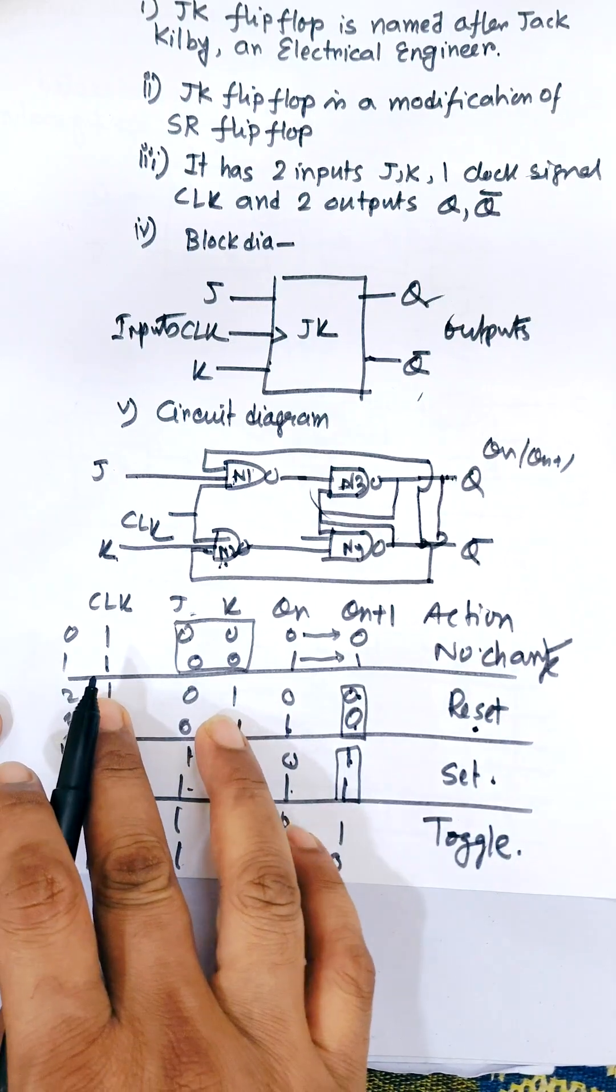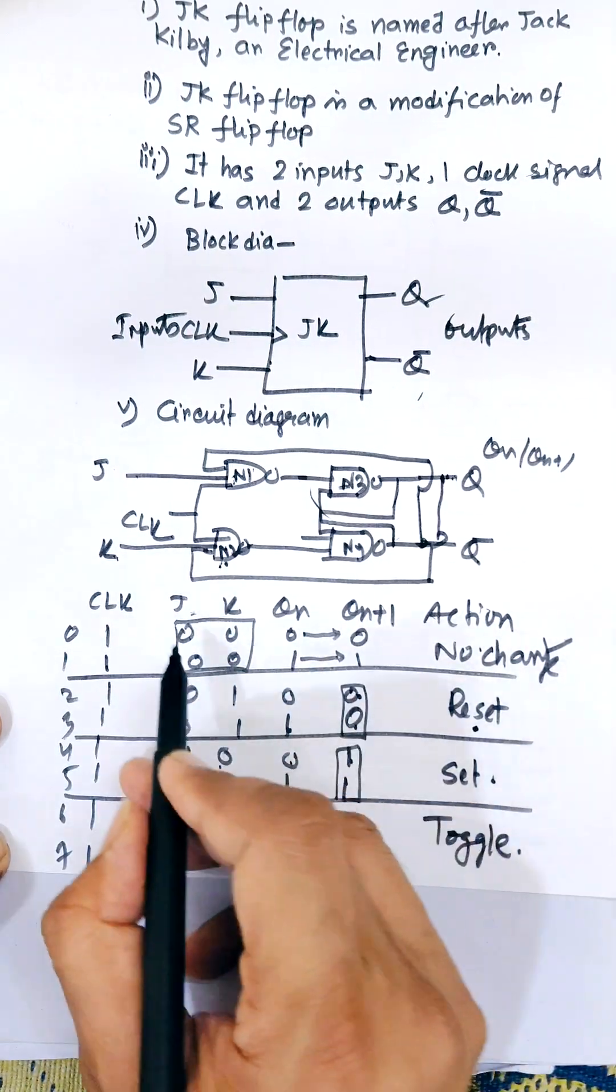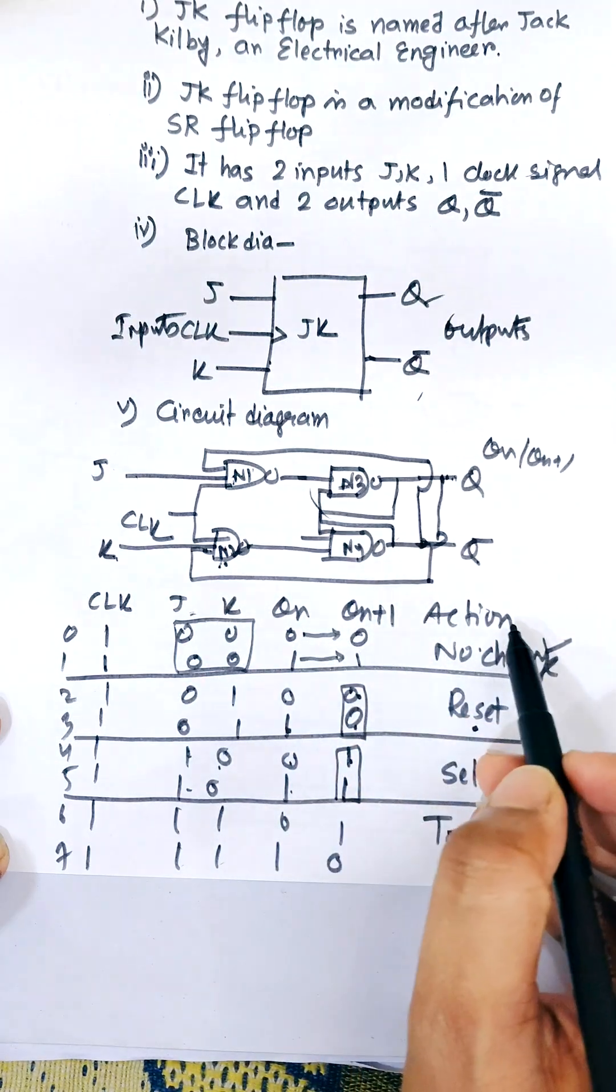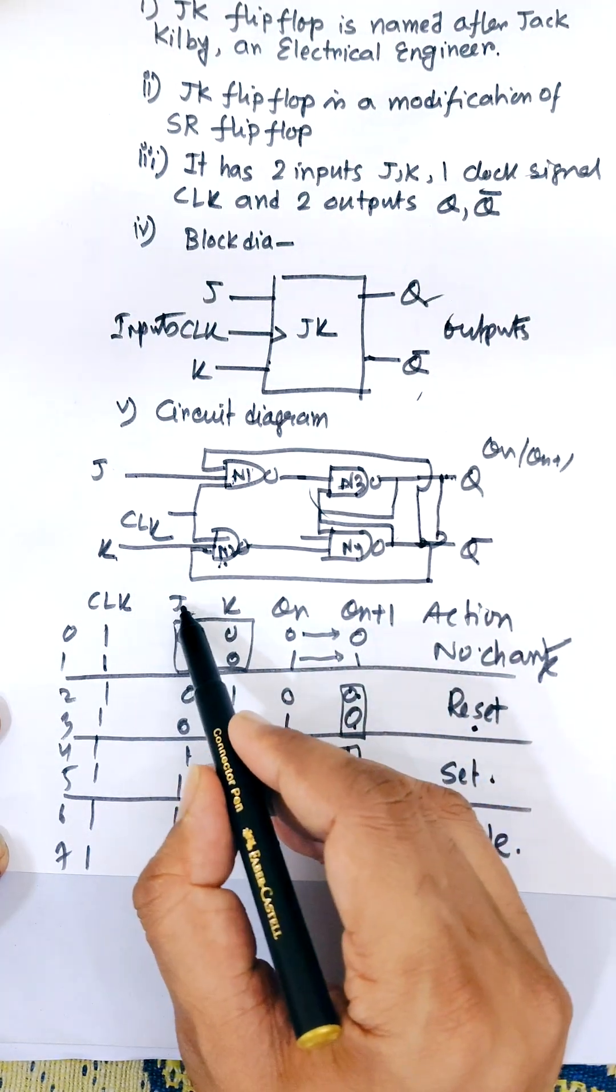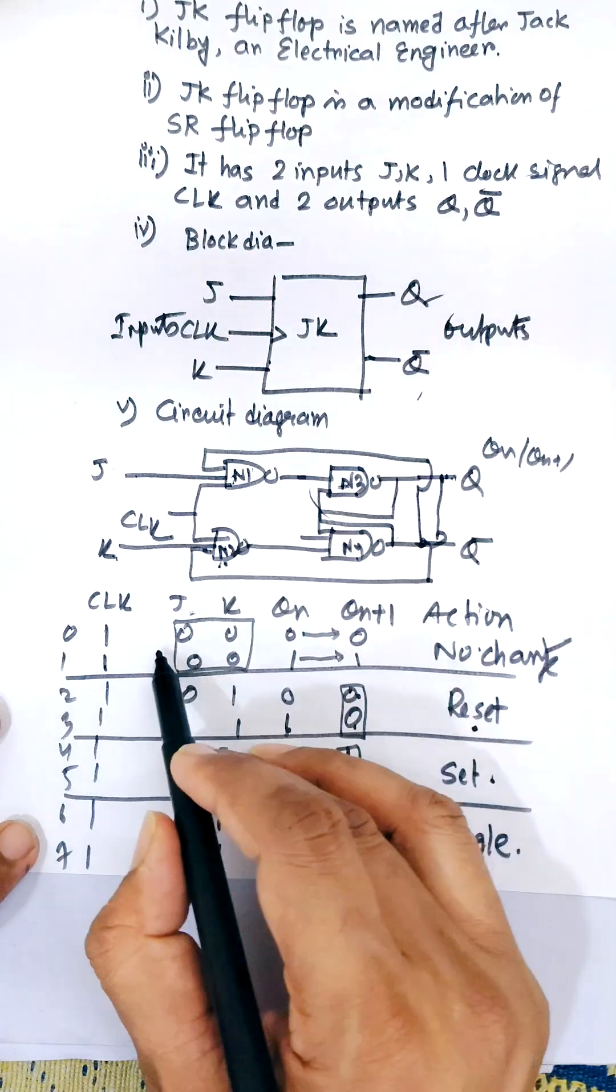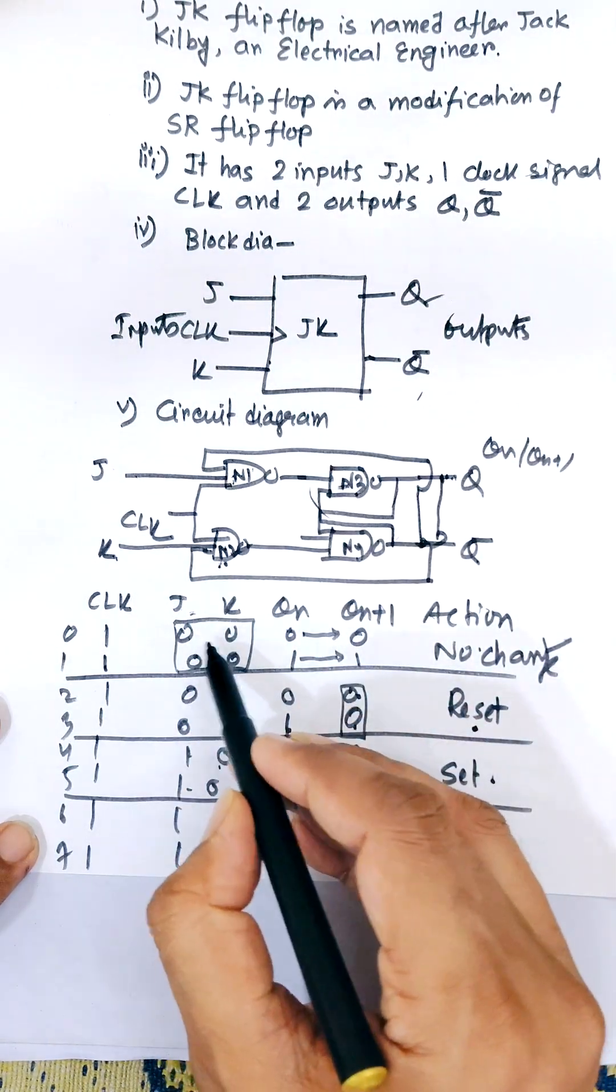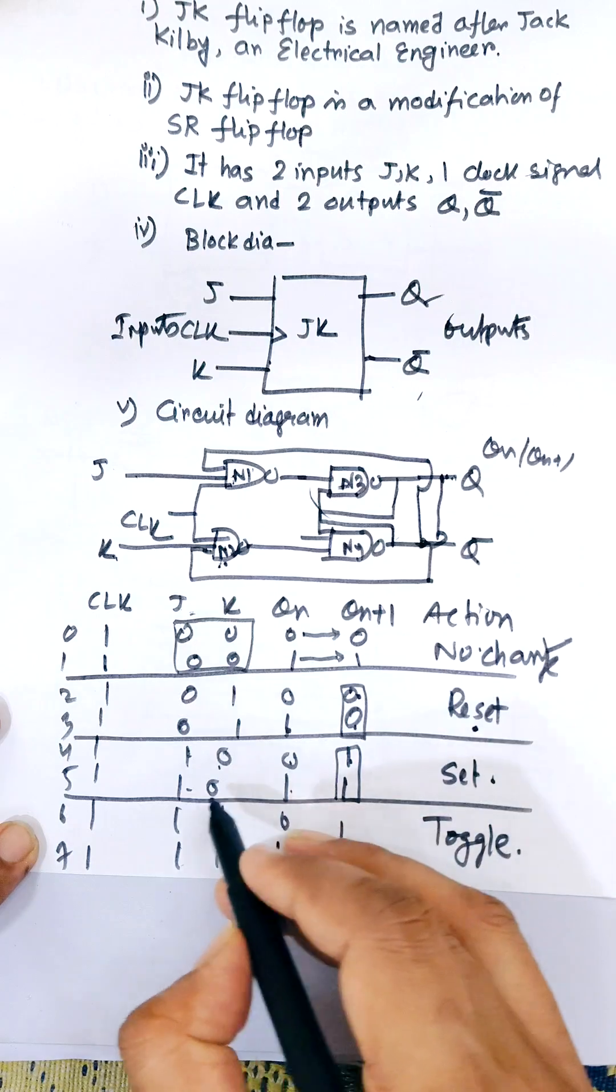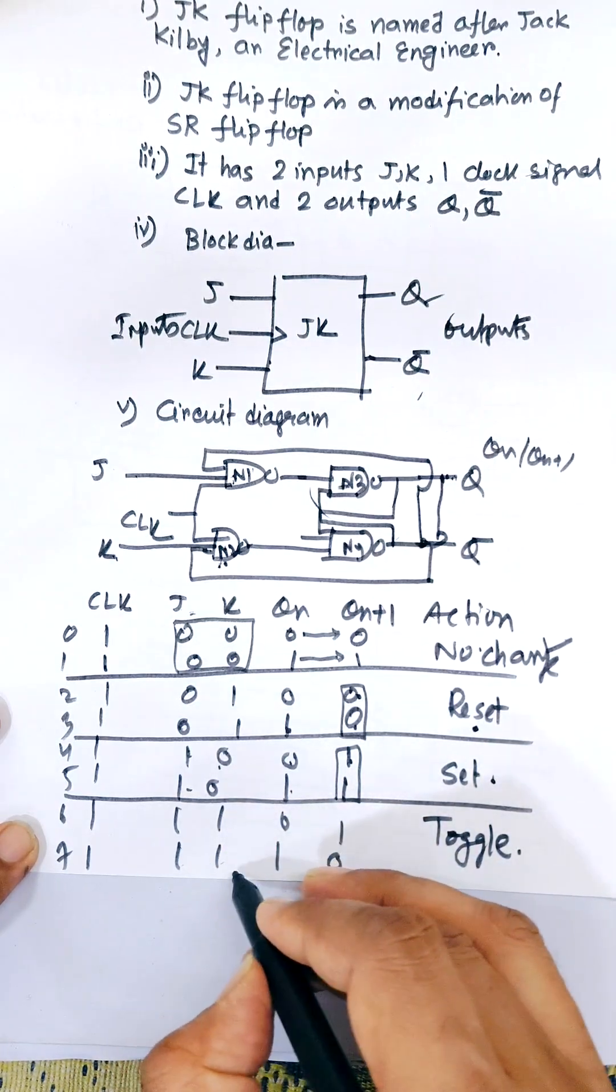Now we need to know the truth table. Here main truth table consists of CLK, J, K, QN and QN+1 and action. These are the eight combinations: 000, 001, 010, 011, 100, 101, 110, 111.